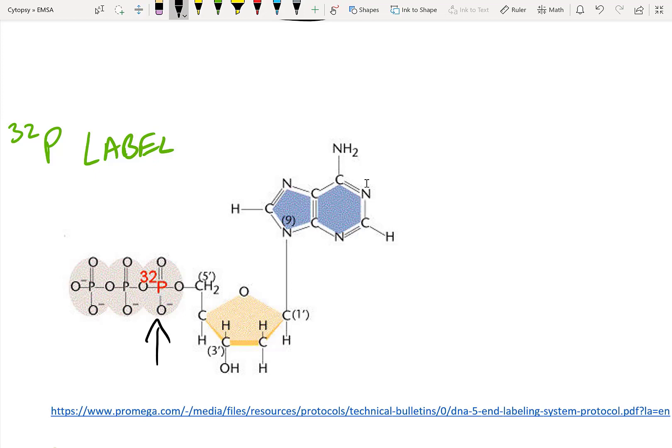To do this, you first have to take off this phosphorus using an alkaline phosphatase. After you've made this into a hydroxyl, now you can use a polynucleotide kinase to add ATP that already has P32 onto the DNA at the 5' end. If you want some really detailed instructions, you should visit this protocol from PROMEGA.